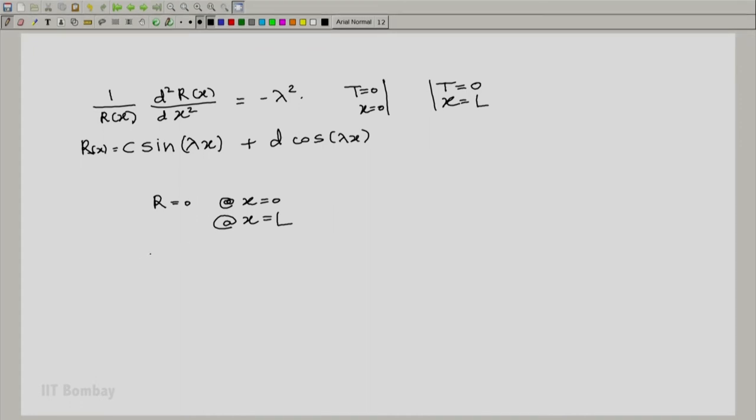By substituting, we will get d = 0. You can easily see that if you substitute x = 0, the sine term automatically goes away. Also, when we substitute r = 0 when x = L, we will get a condition on what values λ can take. So λ will have some discrete allowed values for which this equation will be satisfied. When we substitute x = L, then r becomes 0. So we have sin(λL) = 0. λ turns out to be π/L times some integer k, where k takes the values 1, 2 and so on.